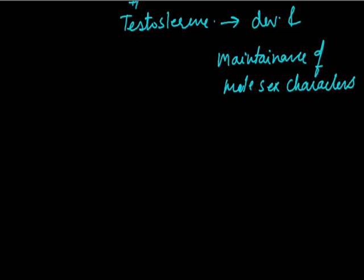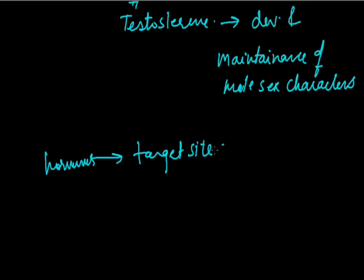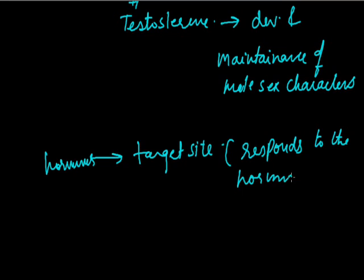Endocrine glands release hormones into the bloodstream to reach a particular body part called the target site, which then responds to the hormone. The testes and ovaries secrete sex hormones responsible for male and female secondary sexual characters. These sex hormones are under the control of hormones from the pituitary gland. The pituitary secretes hormones that stimulate the maturation of ova in the ovaries and sperm in the testes, making it the master gland controlling all other endocrine glands.